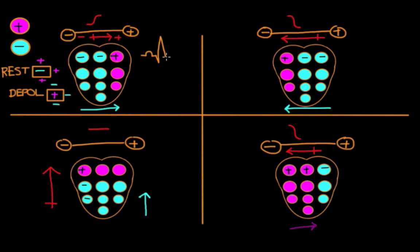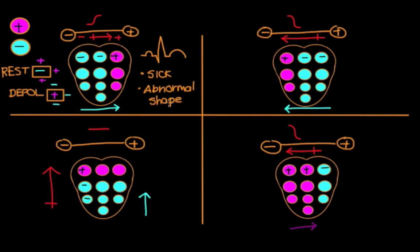An EKG machine tells us a lot about the electrical activity in the heart. In a normal healthy heart, there is a certain pattern that the EKG machine produces. Hearts with sick cells or abnormal shape — such as hearts enlarged from years of high blood pressure — have disrupted electrical conduction, resulting in EKG patterns that differ from normal.